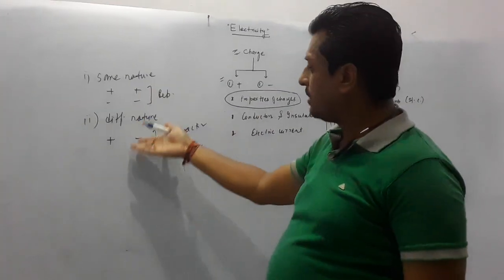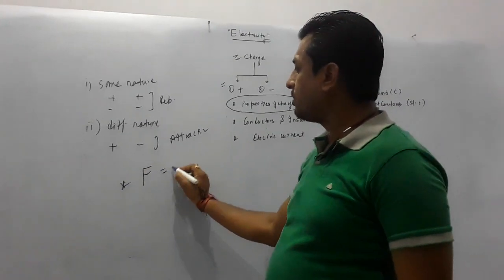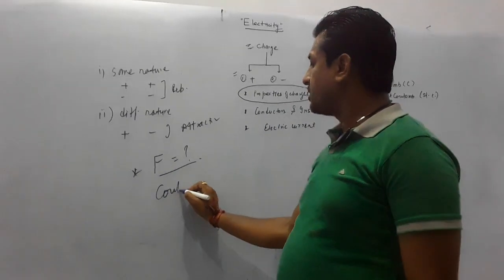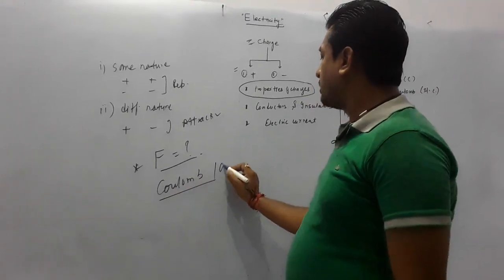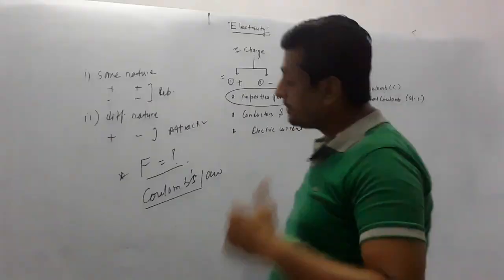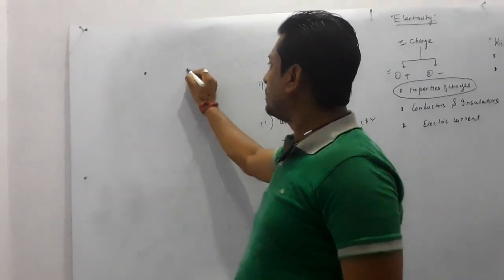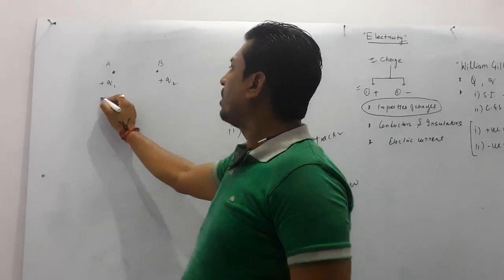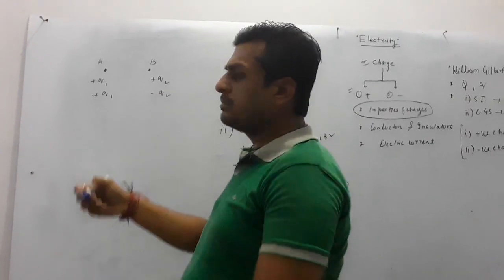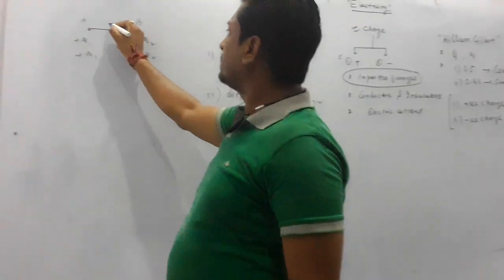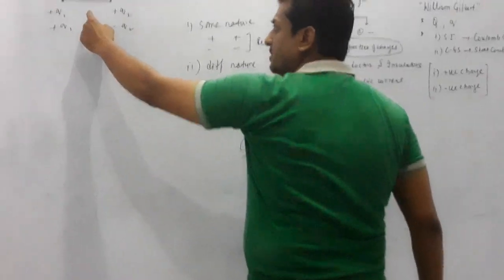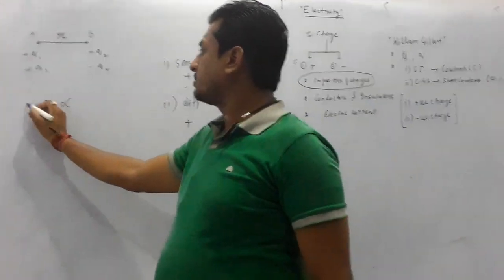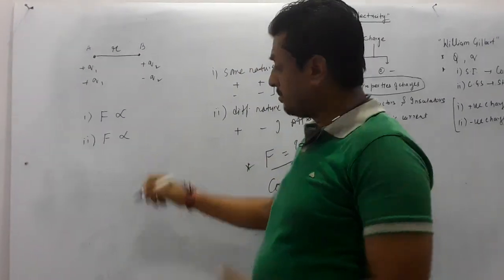In both cases — repulsive or attractive — a force acts. The question is: how do we calculate this force? A scientist named Coulomb gave a law called Coulomb's Law. Coulomb said that if two point charges are there — say charge q1 at point A and charge q2 at point B — with a gap r between them, the force between them depends upon two things.